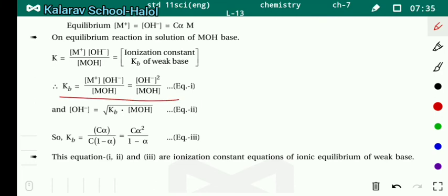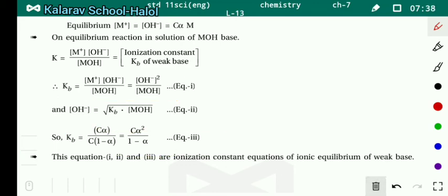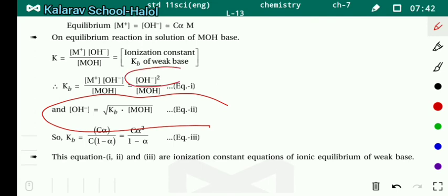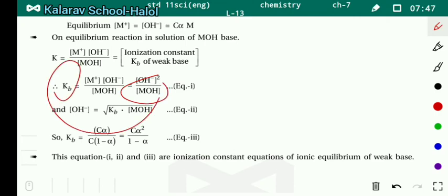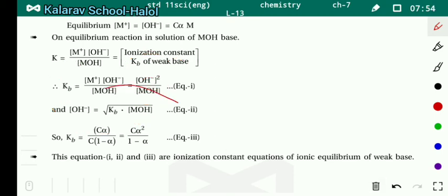These are the ionization constant equations for ionic equilibrium of base. To calculate concentration of OH⁻, take the square root of Kb into [MoH]: concentration of OH⁻ equals √(Kb × [MoH]). This equation is important for solving numerical problems.